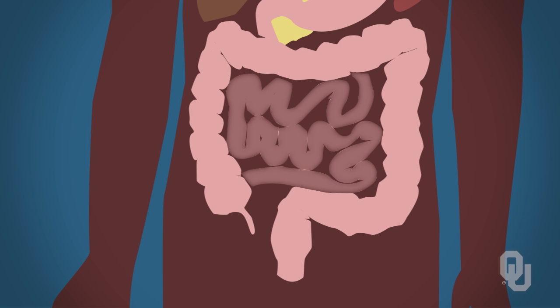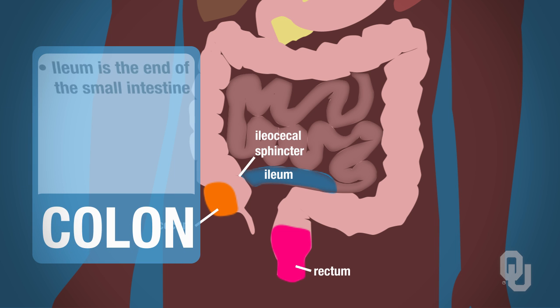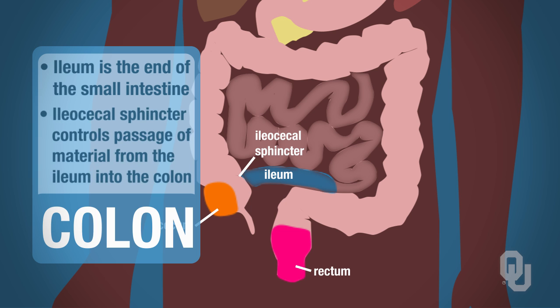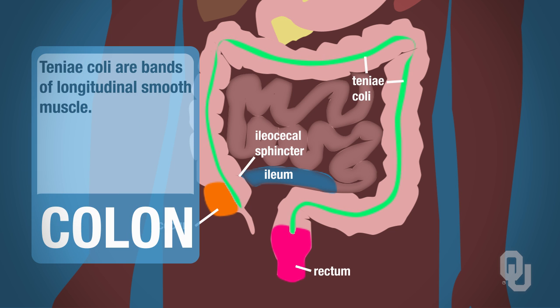Here are some special features of the colon. The large intestine includes the cecum, the colon, and the rectum. We have an ileocecal sphincter that is between the ileum and the colon. The ileum is the last part of the small intestine, and the ileocecal sphincter controls passage of material from the ileum into the colon. We also have teniae coli, which are bands of longitudinal smooth muscle that surround the colon.